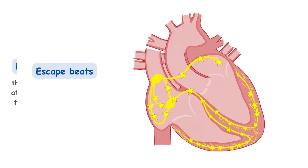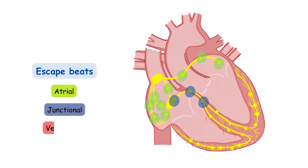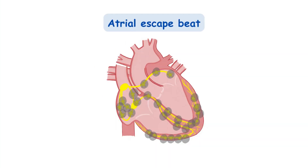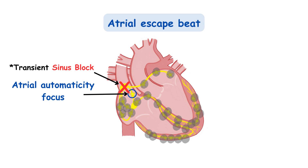Depending on which level the impulse originates from, we have atrial, junctional, and ventricular escape beats. First, we have the atrial escape beat. During a regular sinus rhythm, if a transient sinus block causes the SA node to stop pacing, an atrial automaticity focus will wake up to generate an impulse. Then, because the SA node resumes its pacing again, its overdrive suppresses the nascent atrial focus. This represents an atrial escape beat.